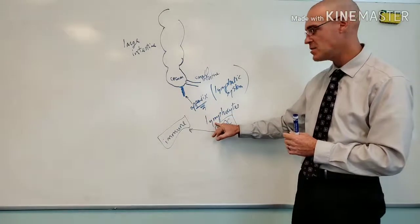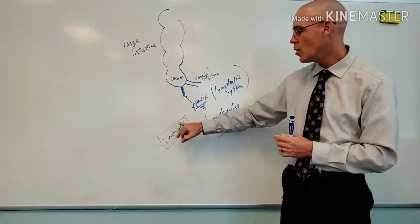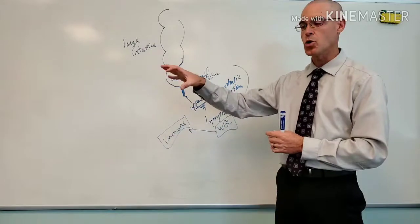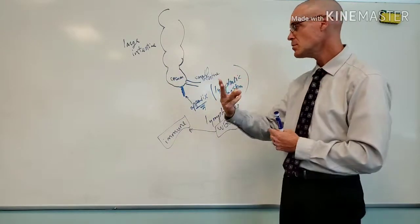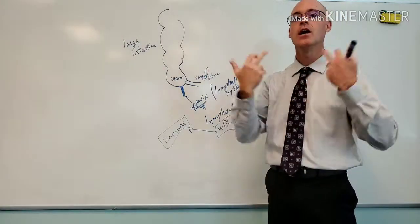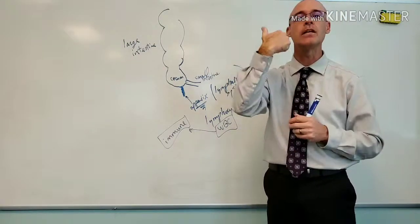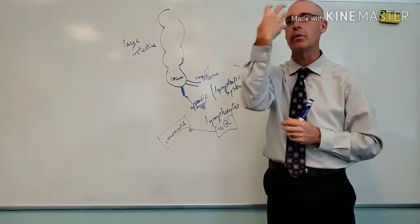They're filled with lymphocytes. And they too are part of the immune system. And of course, the tonsils, many of you guys know, are in the pharynx. We've got three sets of tonsils: pharyngeal tonsils, the palatine, and the lingual tonsils. They're all in what we call the pharynx, the throat area.